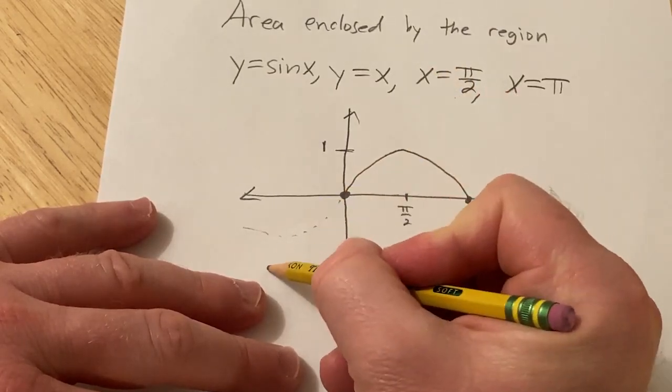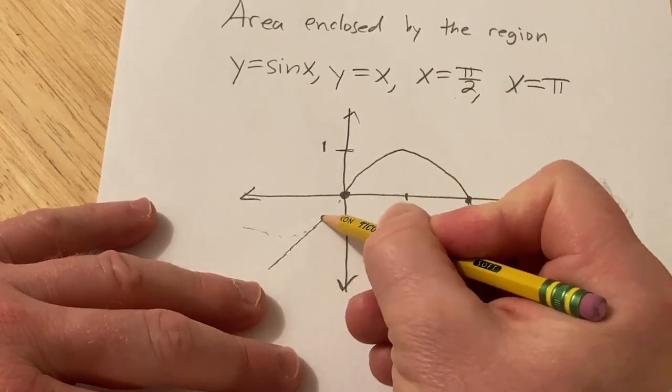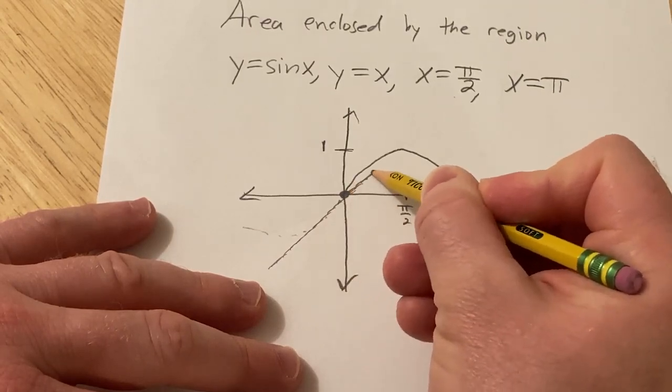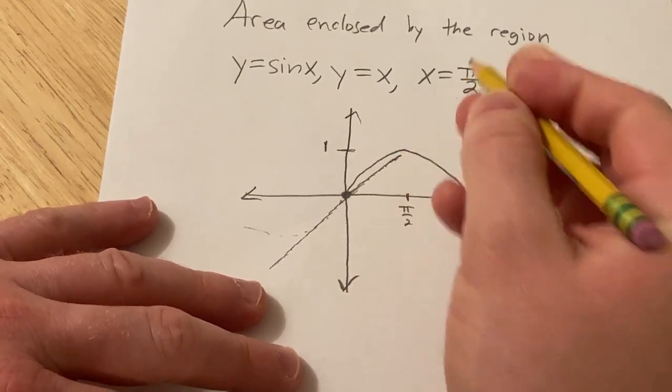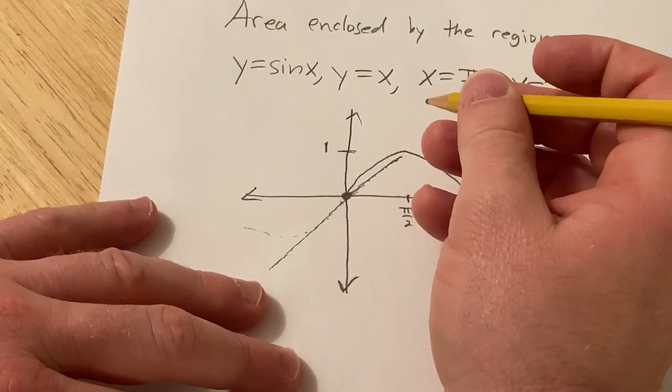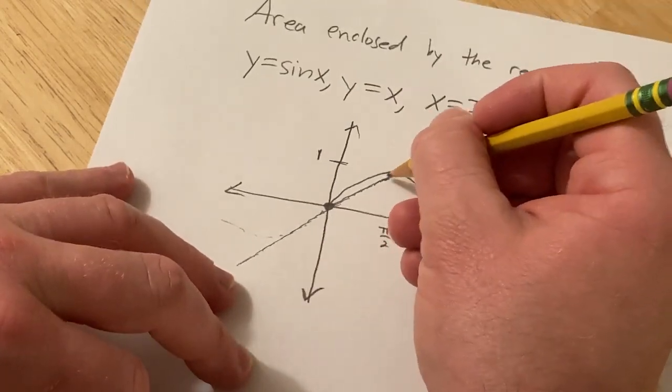I'm just drawing this region here and indicating these numbers. And then y equals x is a line, and it looks like this. And at pi over 2, so at 1 it's 1, so at pi over 2 it's not...